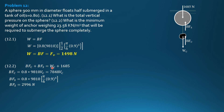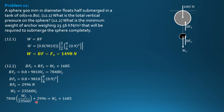Since weight of concrete equals specific weight of concrete times volume — 23,560 times volume of concrete — we replace volume of concrete with weight of concrete divided by 23,560. Substituting into the equation: 7848 times (weight of concrete / 23,560) plus 2996 equals weight of concrete plus 1685. Solving: weight of concrete anchor equals (2996 minus 1685) divided by (1 minus 7848 over 23,560), giving a required anchor weight of 1966 newtons.